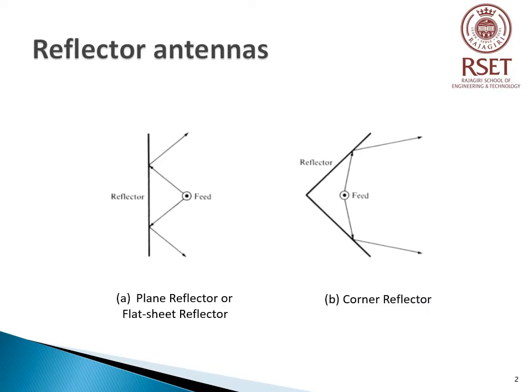Reflector antennas have been in use since the discovery of electromagnetic waves. They are used in radio astronomy, satellite tracking, deep space communication, etc. Some of the most popular reflector antennas are Plane Reflector, Corner Reflector, and Parabolic Reflector.